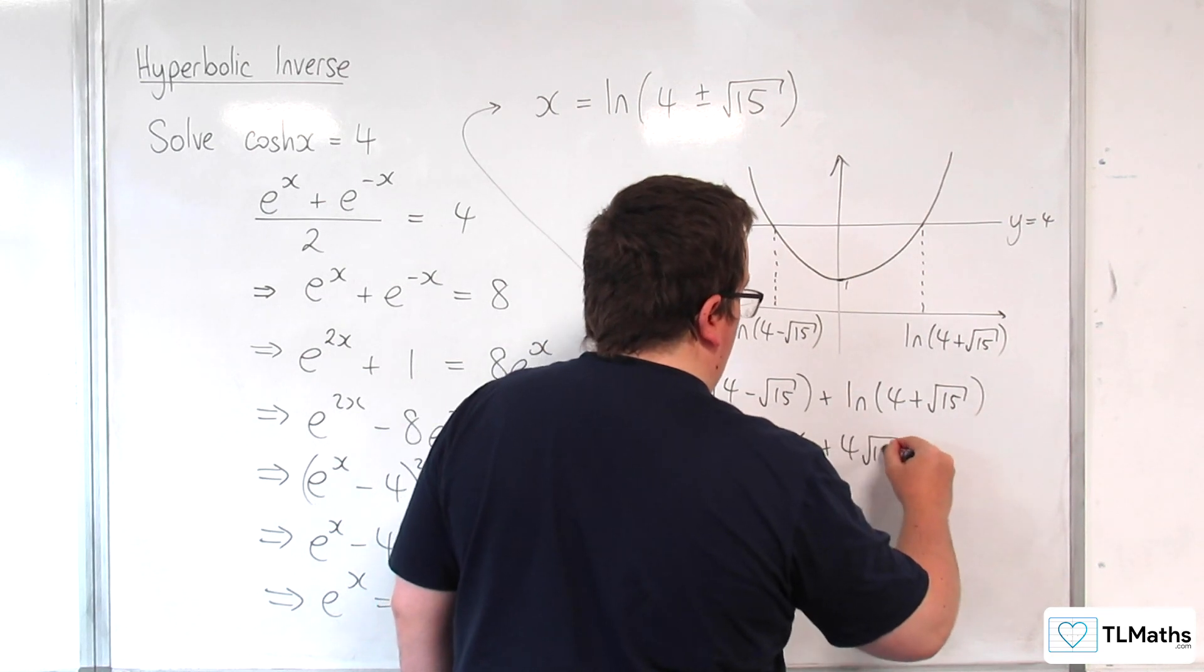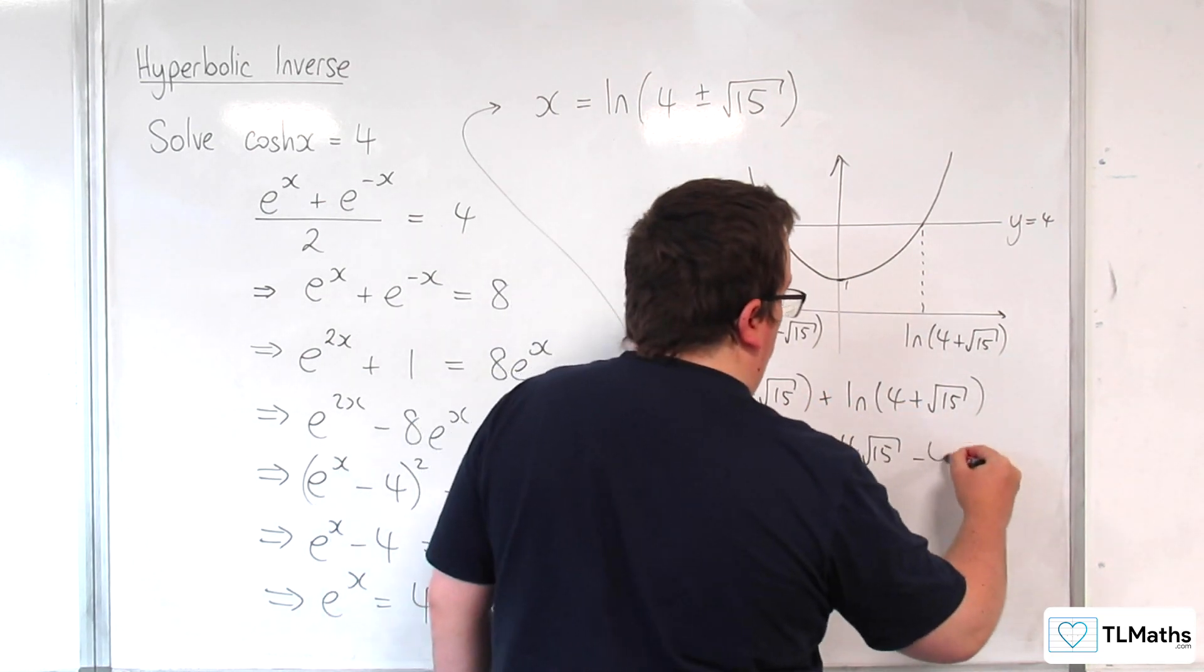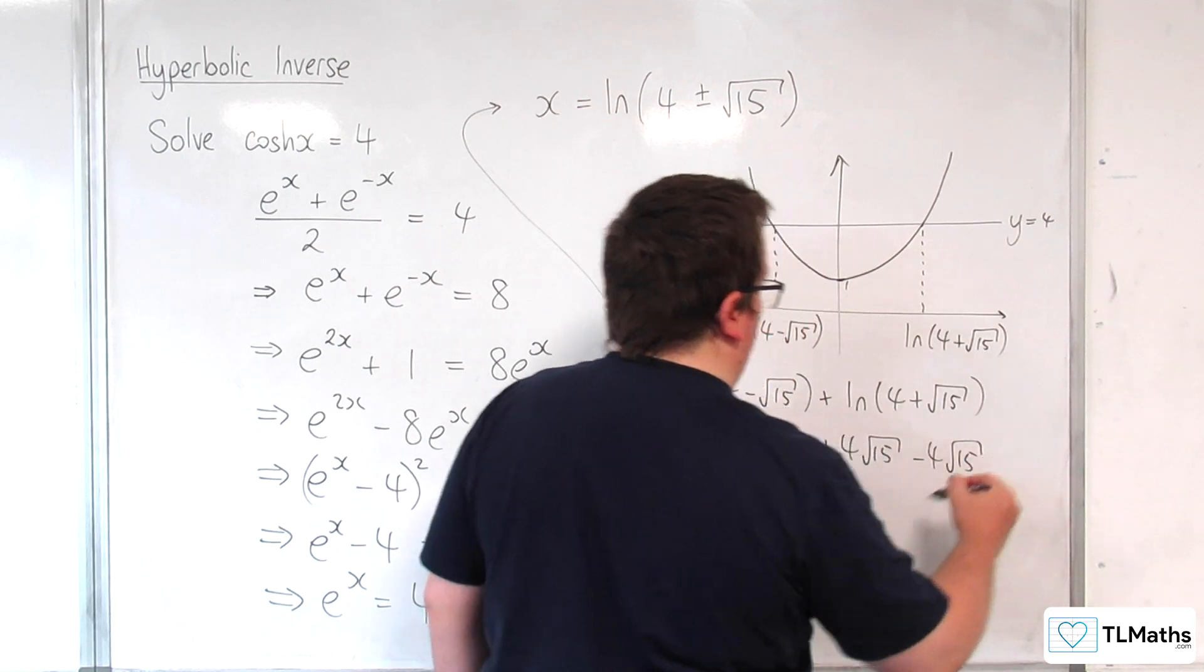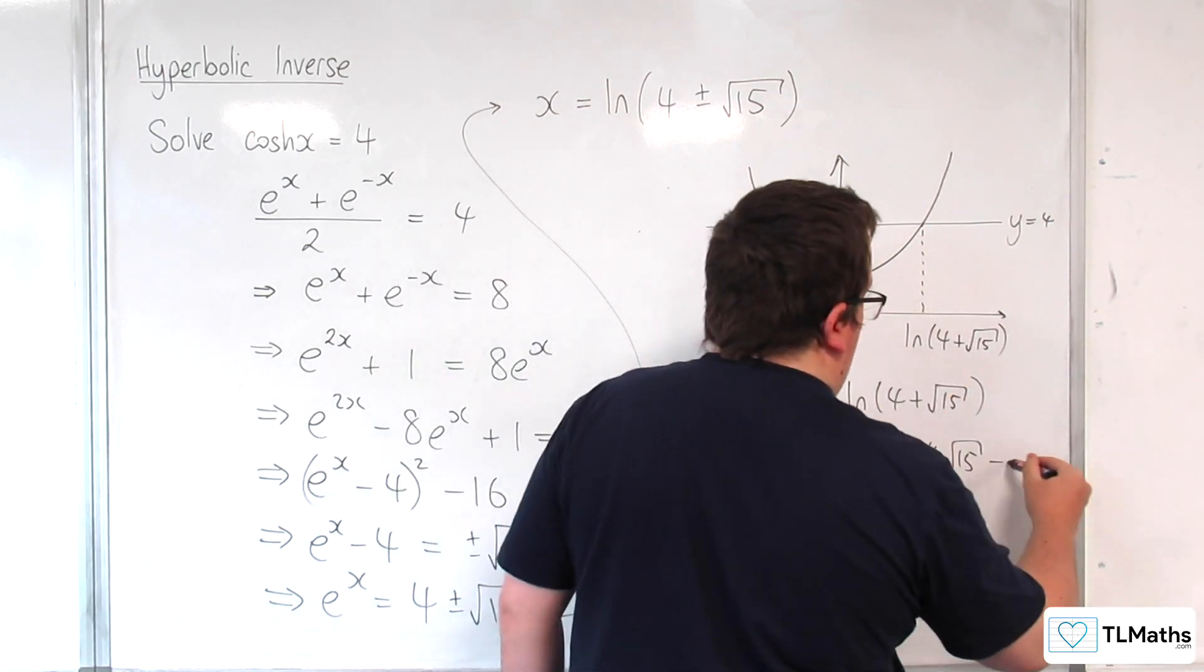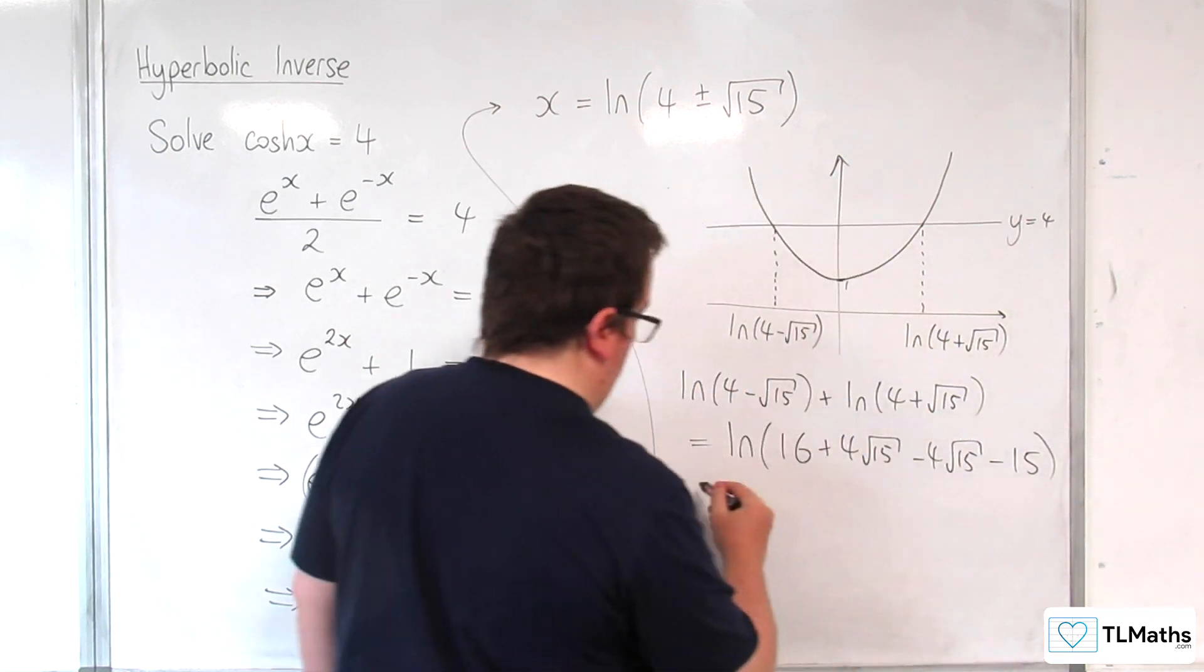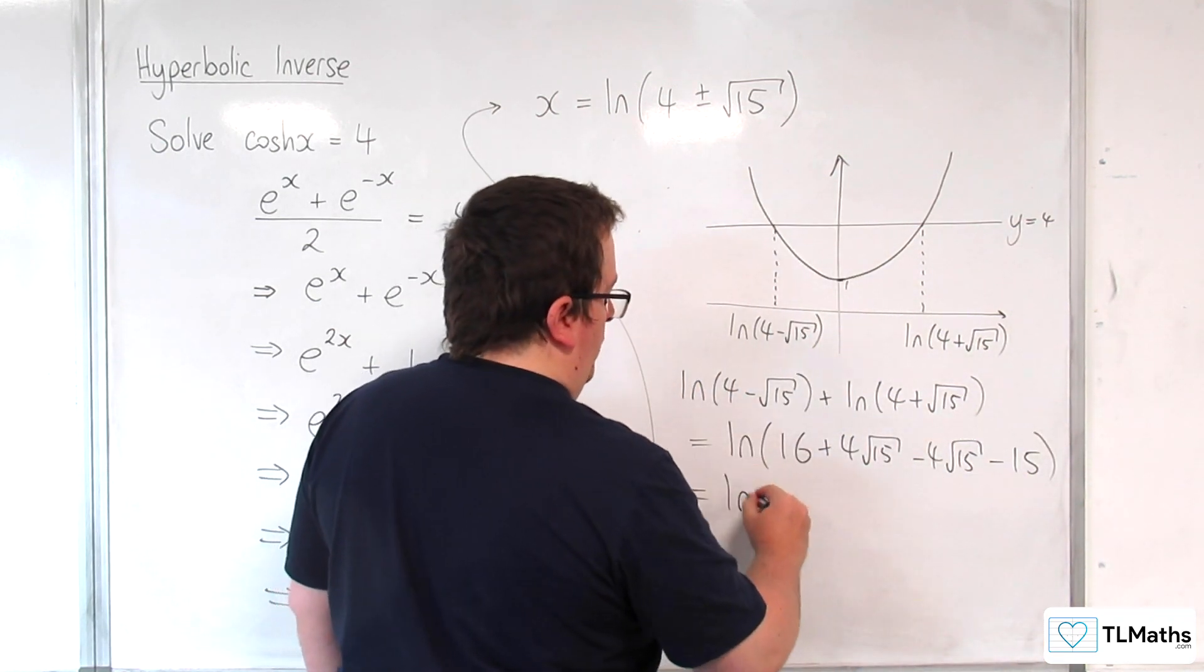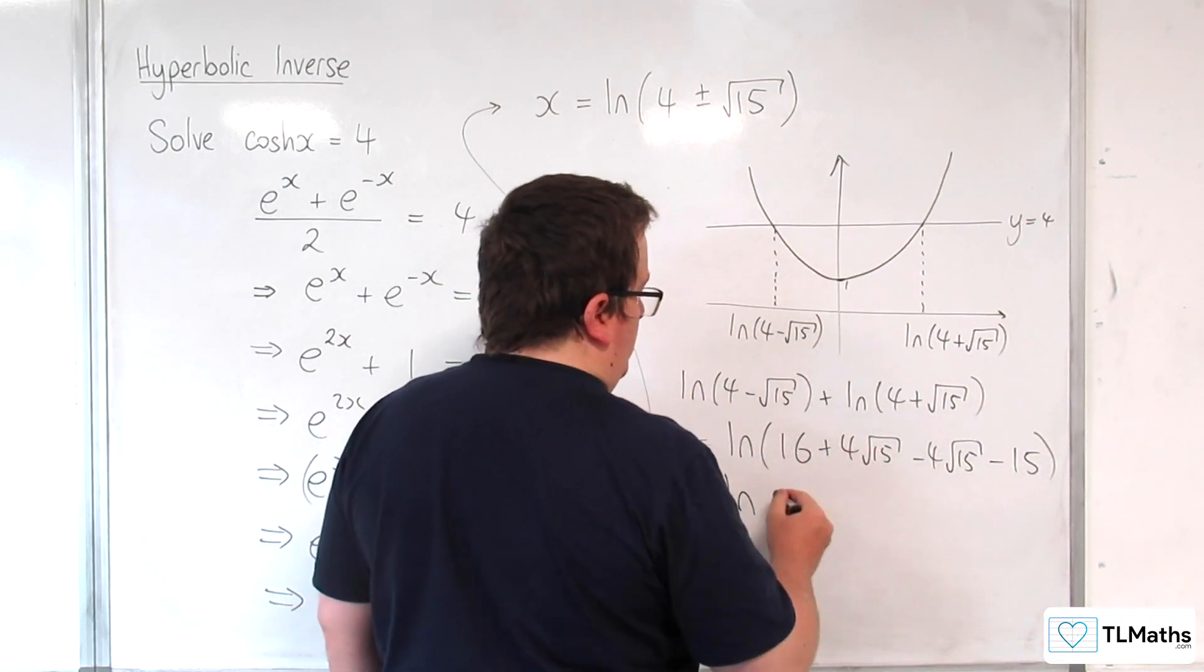4 times 4 is 16. 4 times root 15, 4 root 15, take away 4 root 15, and then minus root 15 times root 15 is minus 15.